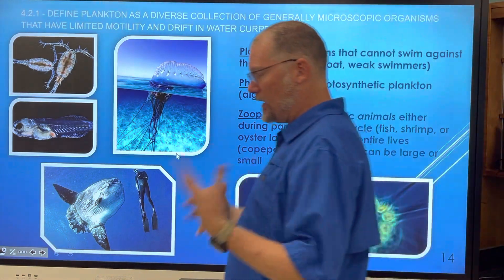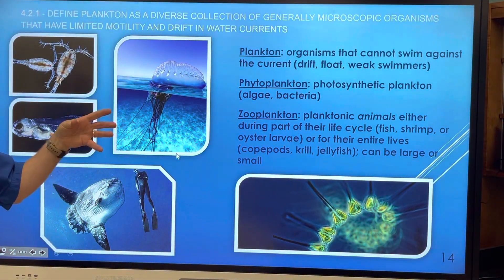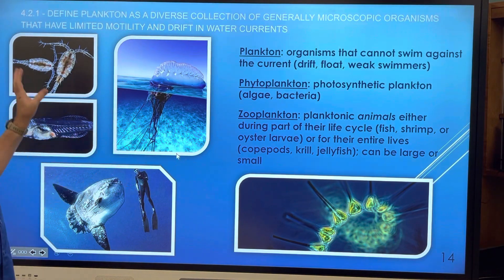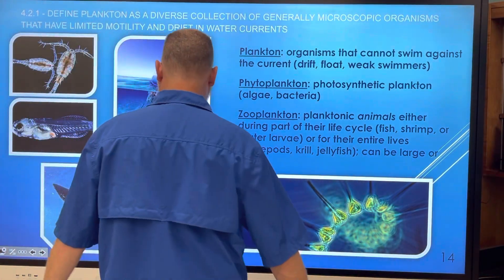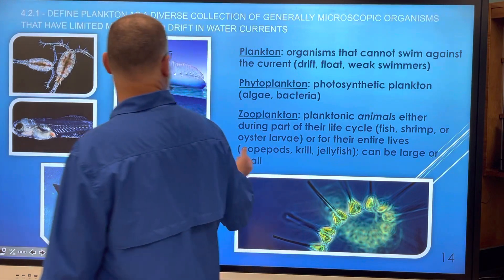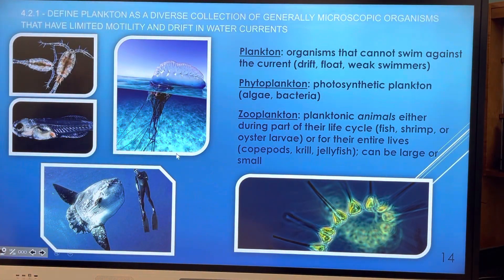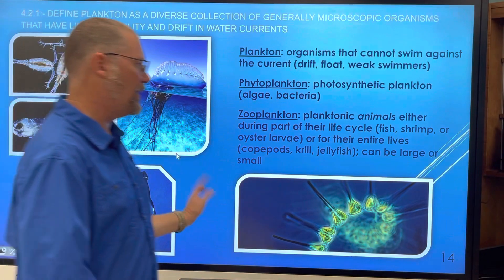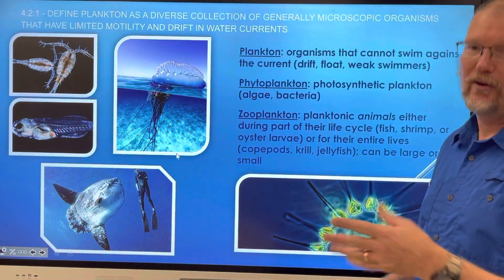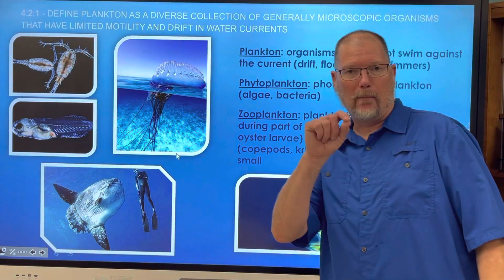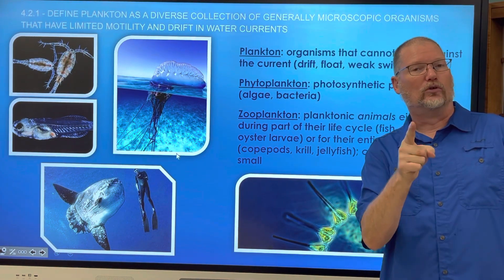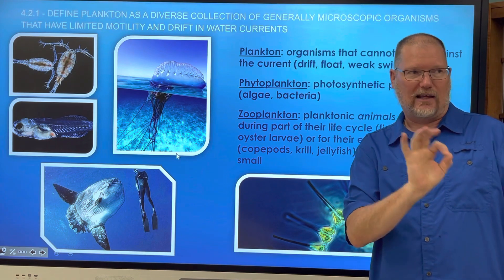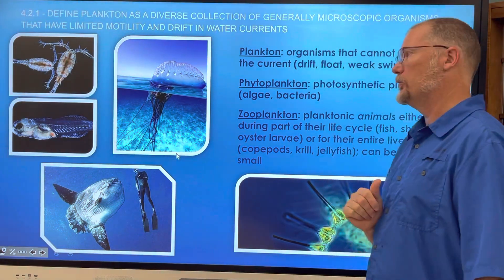So we're moving on from bacteria to something called plankton — there are different kinds. Here you can see all different kinds of plankton, even the mola mola — M-O-L-A, M-O-L-A — also known as the ocean sunfish. Write that in your notes right now. That's a scientific name, so follow the rules when writing it: capitals, lowercase, and underlines.